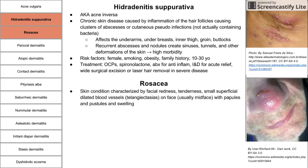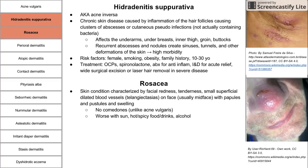Another type is acne rosacea. Rosacea is a skin condition characterized by facial redness, tenderness, and small superficial dilated blood vessels called telangiectasias, usually in the middle of the face. You might also see pustules, papules, and swelling. There are no comedones in rosacea — that differentiates it from acne vulgaris. Rosacea worsens with triggers including sun, hot and spicy food, and alcohol. It can also present with rhinophyma — a growth of the nose caused by enlarged sebaceous glands.